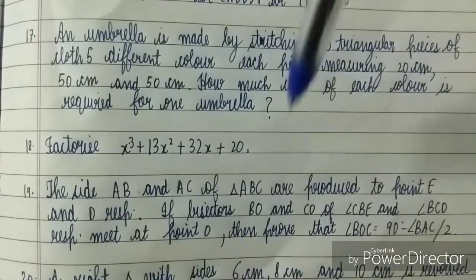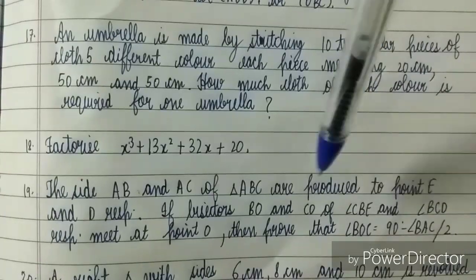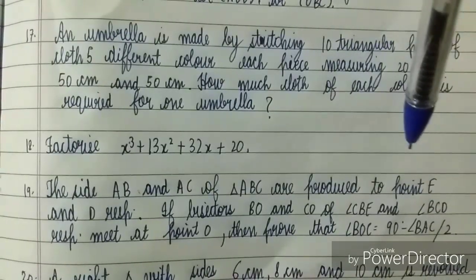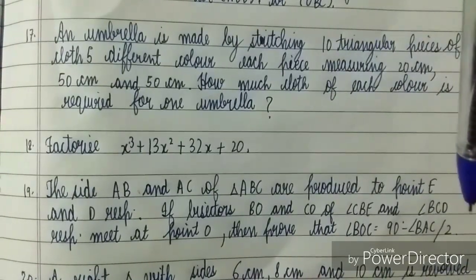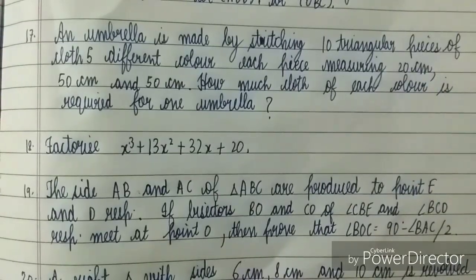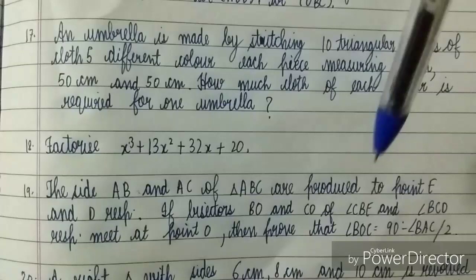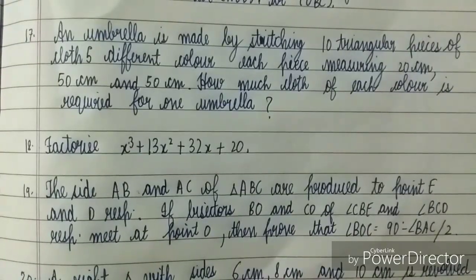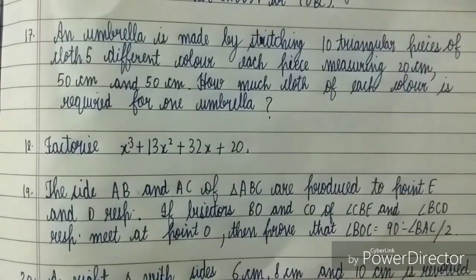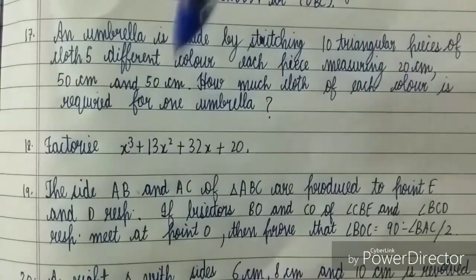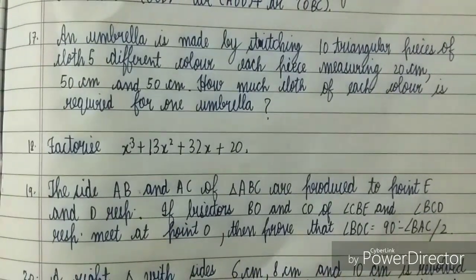The sides AB and AC of triangle ABC are produced to points E and D respectively. If bisectors BO and CO of angle CBE and angle BCD respectively meet at point O, then prove that angle BOC equals 90 degrees minus half angle BAC. Very important question - don't leave this one.